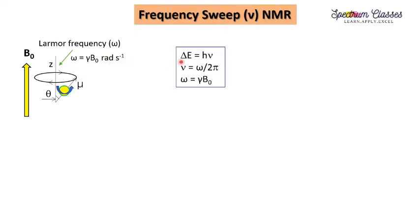Here are some important equations to understand. ΔE = hν, where ΔE is the energy difference between the high and low energy states, h is Planck's constant, and ν is the frequency in hertz. There is a relationship between ν in hertz and Larmor frequency ω in radians: ν = ω / 2π, and ω = γB0.